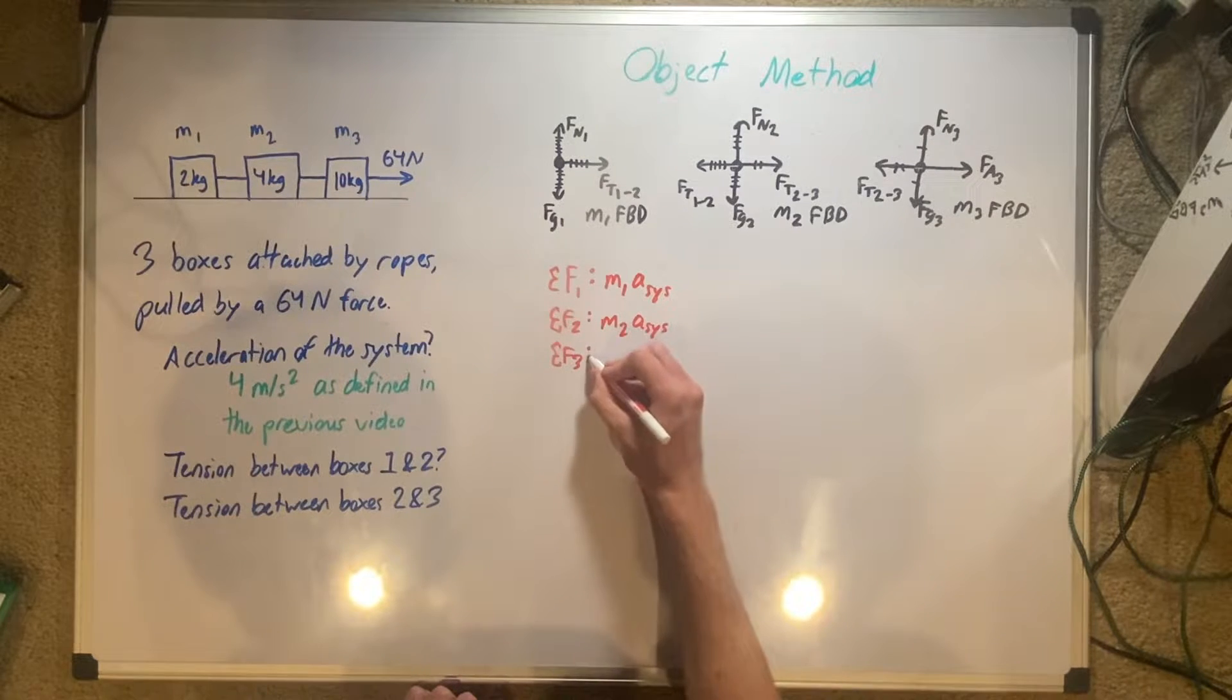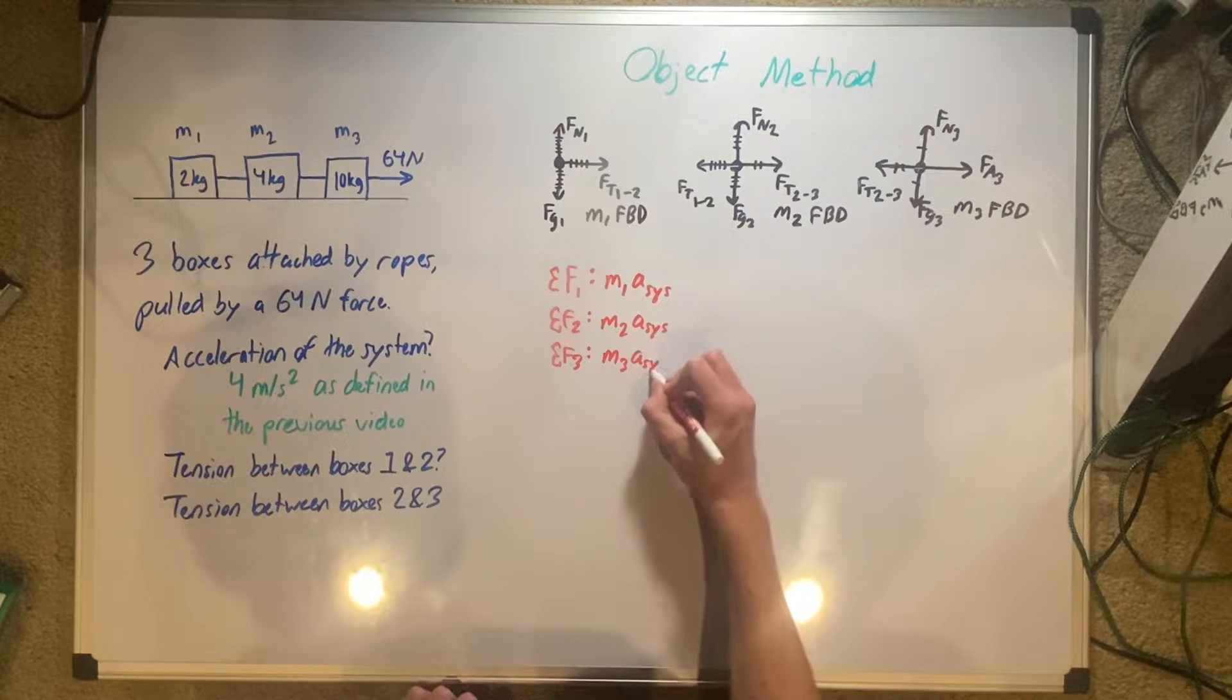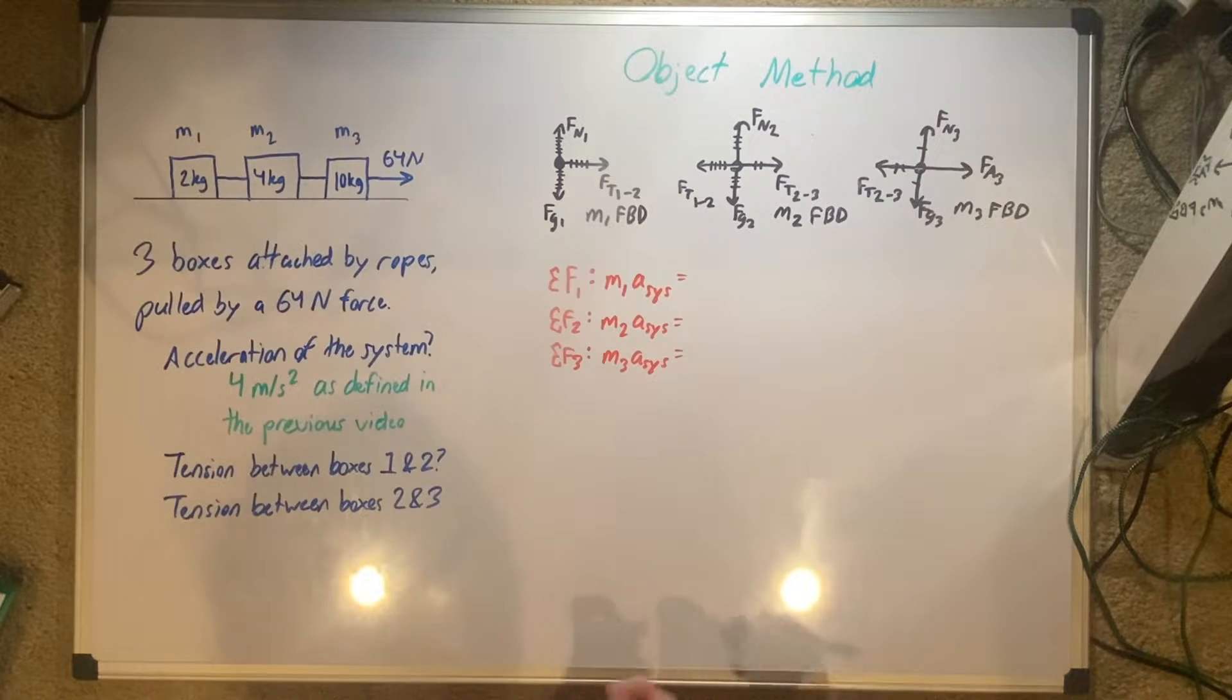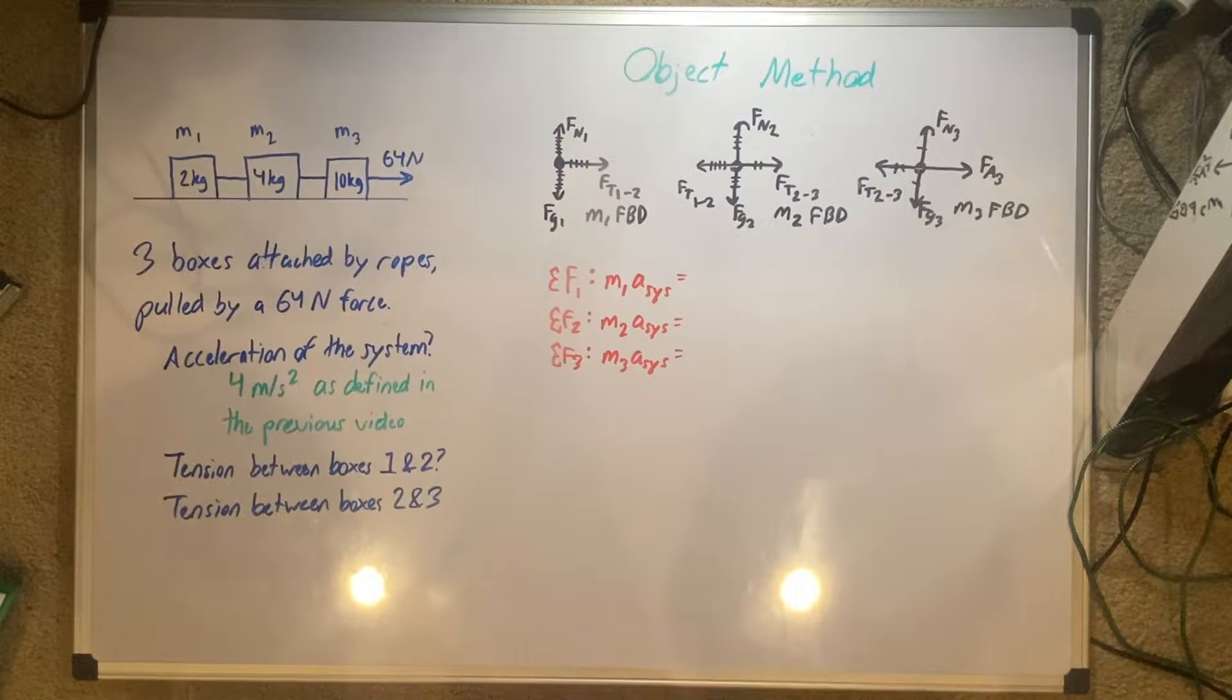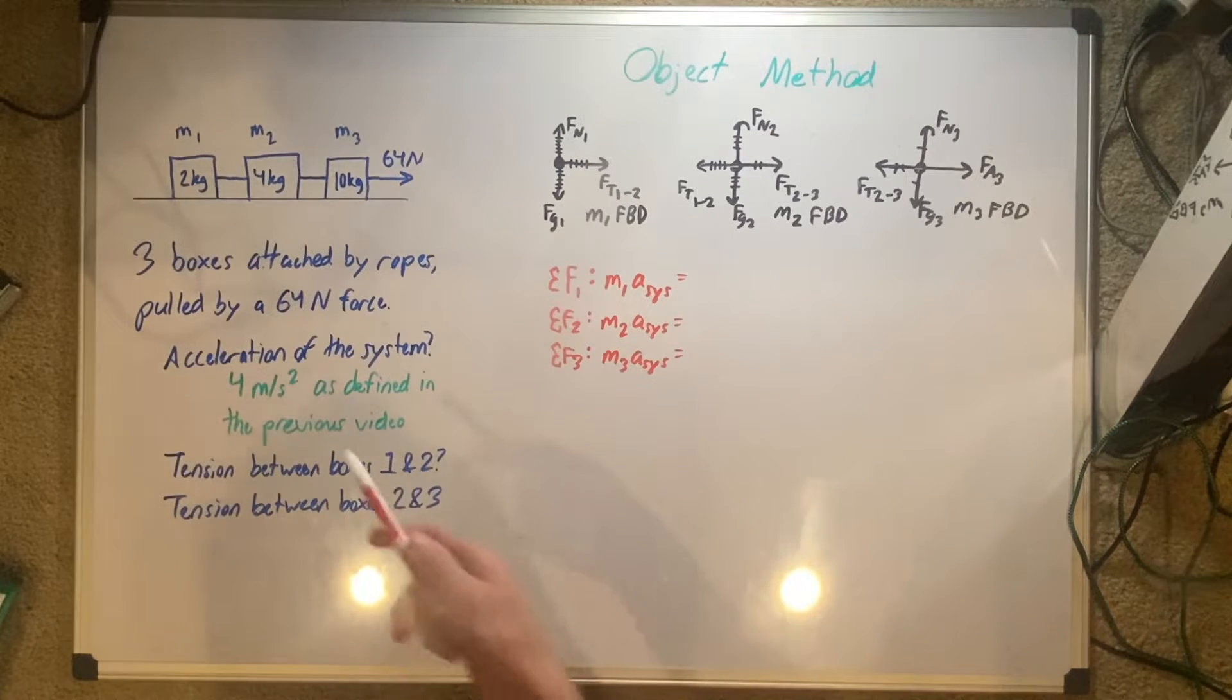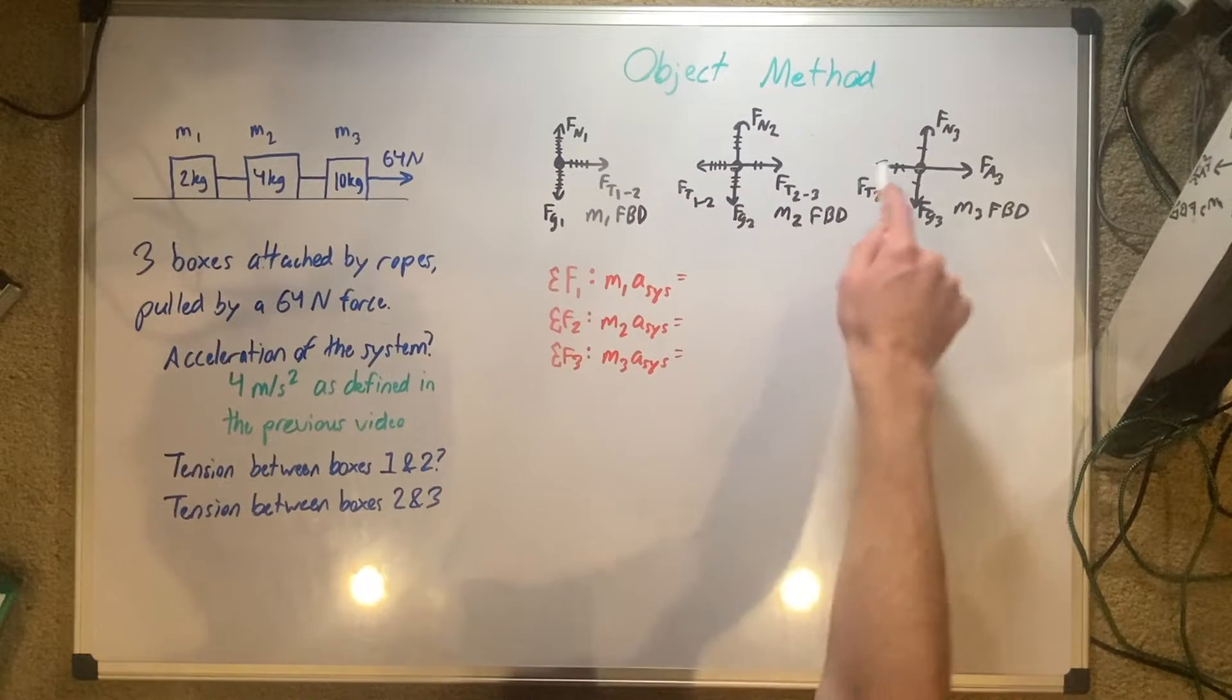Now, sum of forces on box 3, mass 3 acceleration of the system. This is also equal to something else. We're trying to define things in our x direction because that's all what it's asking for. Tension is only traveling in this x direction. It doesn't go up and down because the strings aren't going up and down. We can kind of omit the things that go up.